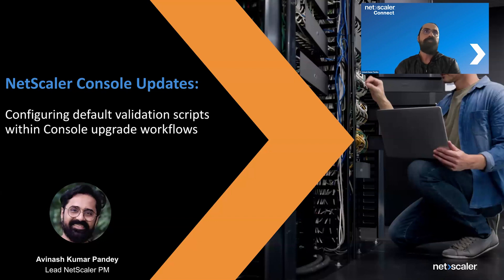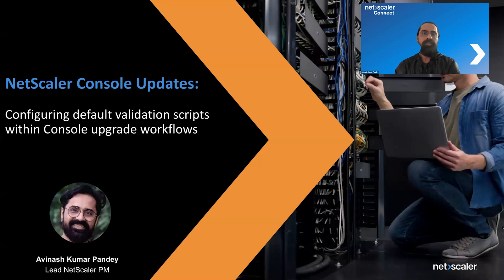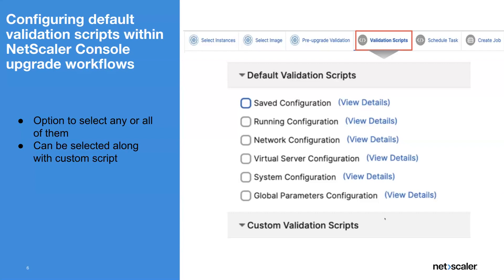That's where validation scripts play a huge role. It has been there for a long time, but it was kind of a green field where you were given a choice of your configuration and what you want to validate. However, not everybody is aware, and that's where default configuration scripts come in. As you see, in the same page we have given something called default validation scripts, which consists of six categories: safe configuration, running, network configuration, virtual server related configurations, system, and global.